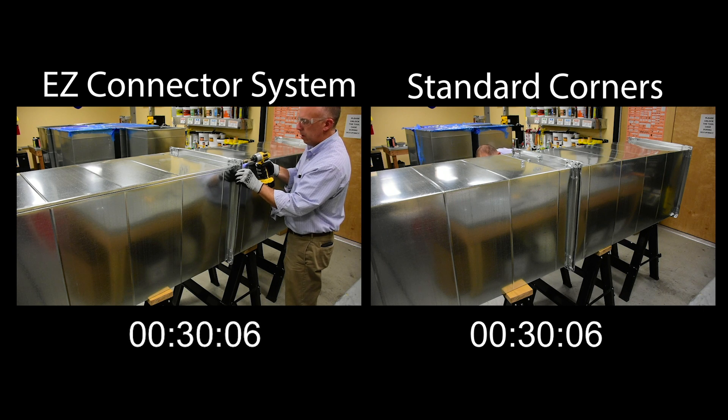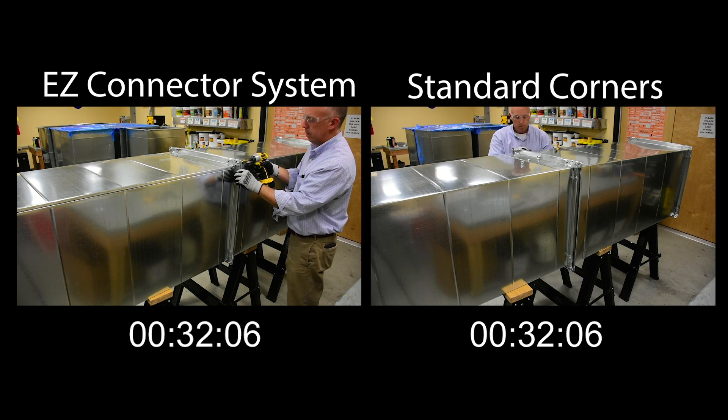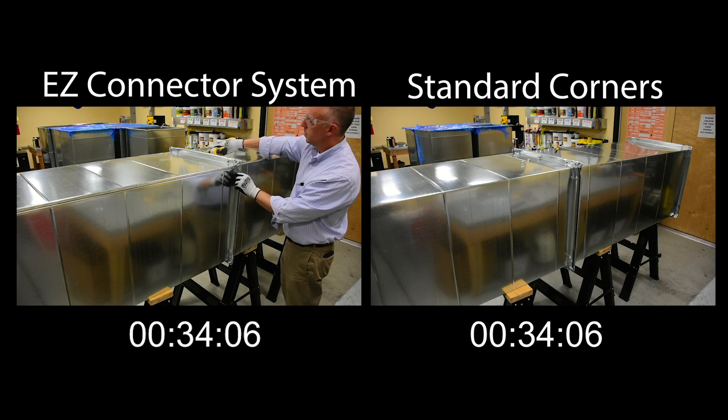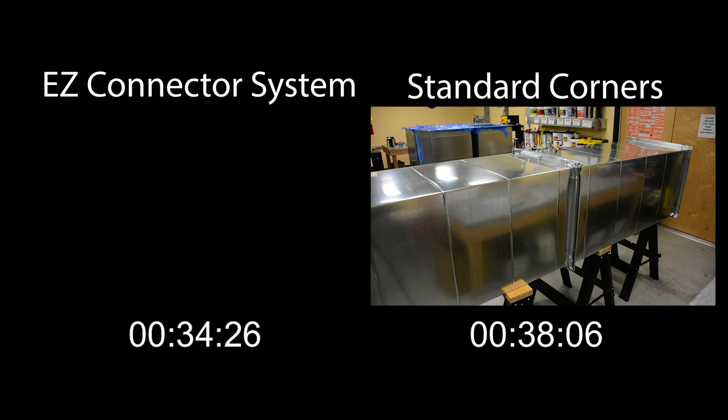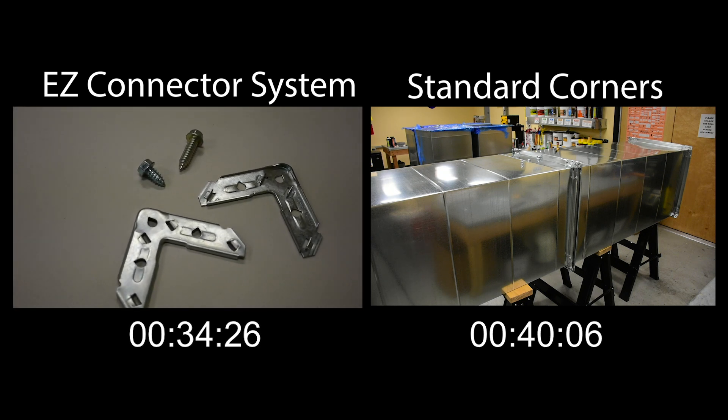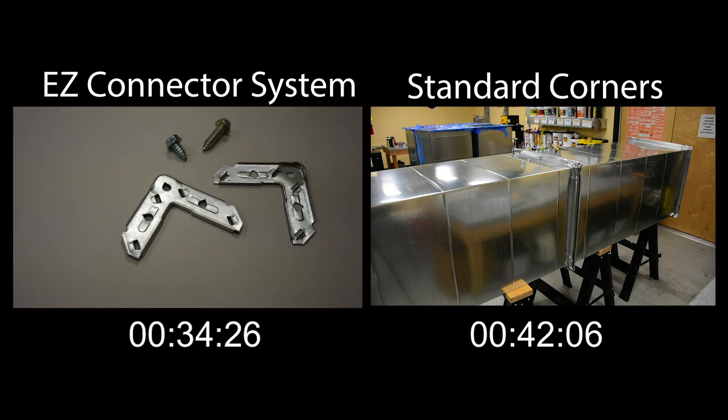The Easy Connector system eliminates the need for drift pins and clamping of duct sections, allowing the installer to use a cordless impact driver for ultra fast single-handed duct joint fastening. No more fumbling with time consuming washers, nuts, and bolts.